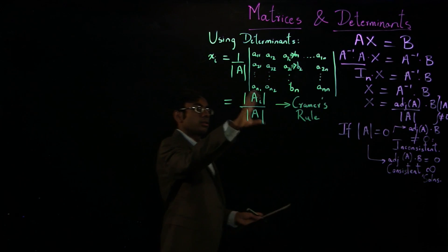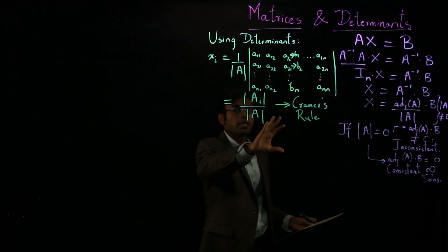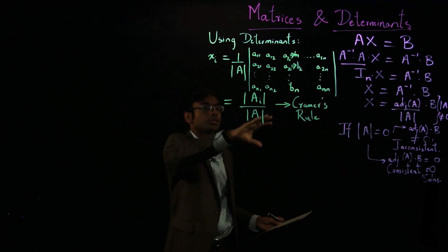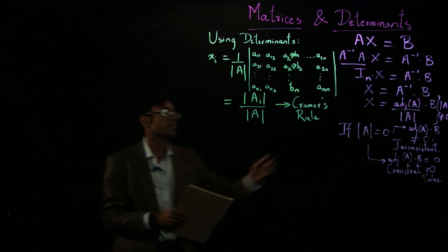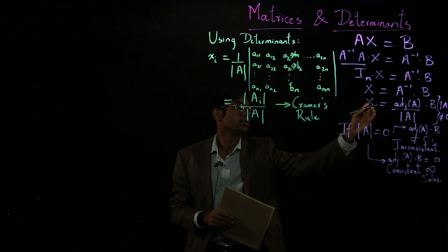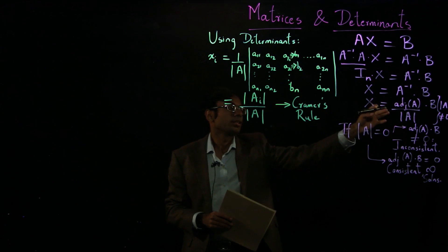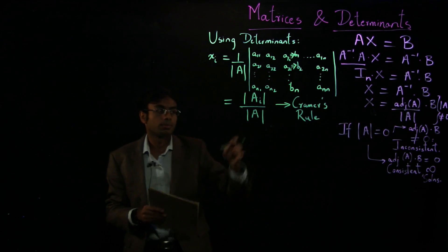In reality, these two are identical. If you care to write this whole thing down symbolically, you can show that this works out to be this exactly. So each element of this x will work out to be adjoint of a over determinant of a times matrix b, which will work out to be this.